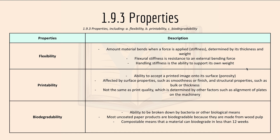Printability is the ability to accept a printed image onto its surface, or porosity — how easily ink gets absorbed into the paper. It's affected by surface properties such as smoothness and finish, and structural properties such as bulk or thickness. Printability is not the same as print quality, which is determined by other factors such as alignment of plates or machinery. Printability is essentially how well a material can absorb the printed image.